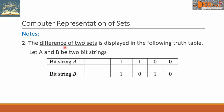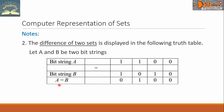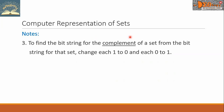Number two: the difference of two sets is displayed in the following truth table. Let A and B be two bit strings. For bit string A we have 1100, and for bit string B we have 1010. For the difference A minus B: 1 minus 1 is 0, 1 minus 0 is 1, 0 minus 1 is 0, 0 minus 0 is 0. We can see that A minus B will have the value 1 only if A is 1 and B is 0.